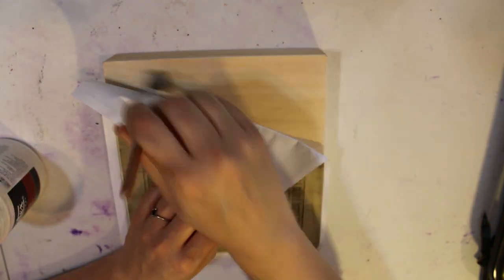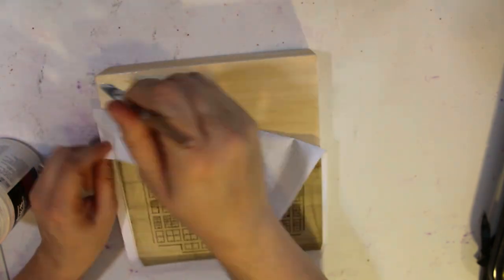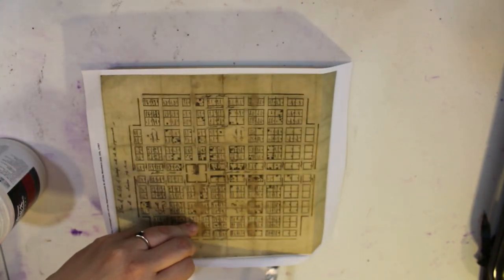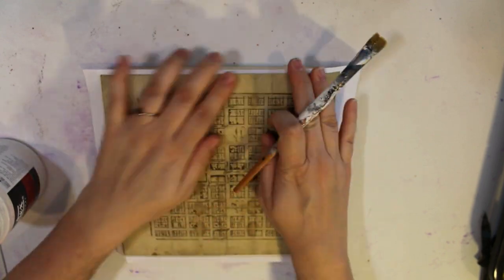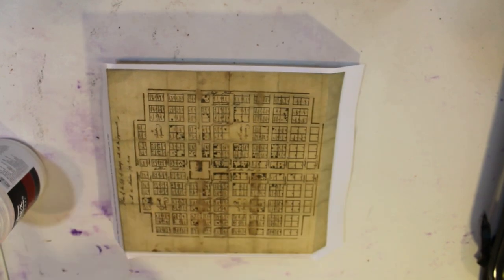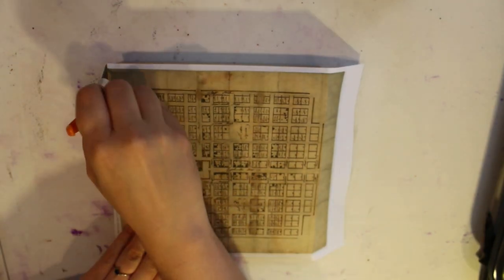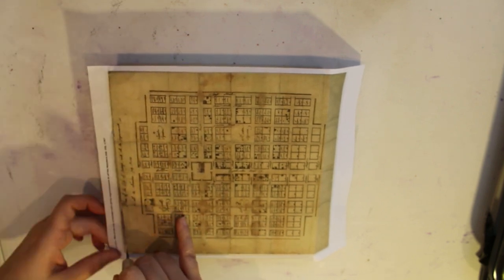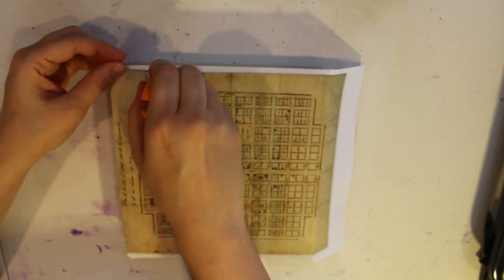You can put paper into encaustic, and the wax acts as an adherent as well, but one of the risks you run when you just use medium is that the paper can kind of float between the layers of wax and rise to the surface if you fuse it too much.